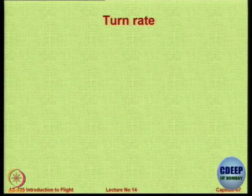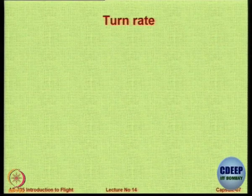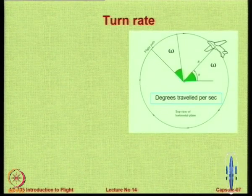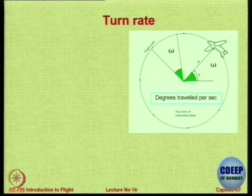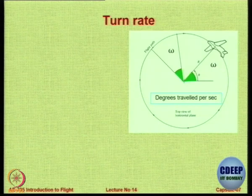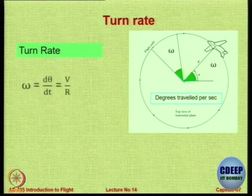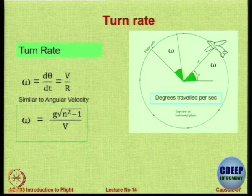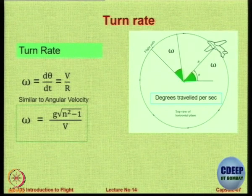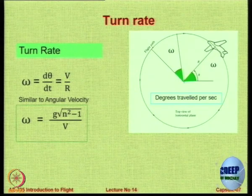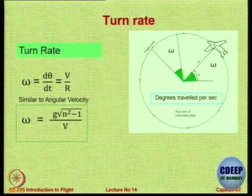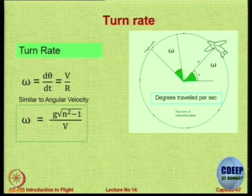The other aspect is the turn rate — when closing in on an enemy, you would like a larger value of dθ/dt, the rate of change of heading angle. Turning at a small radius is meaningless if you are not turning fast enough. The turn rate ω = dθ/dt = V/R, which gives ω = G·√(n²−1)/V. So omega is proportional to √(n²−1) and inversely proportional to V — if you want to turn at a faster rate, you need to be at a lower velocity.